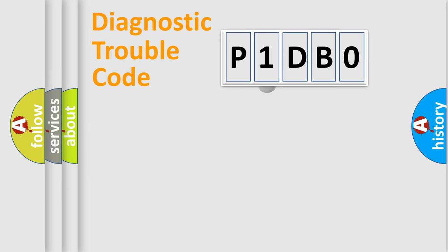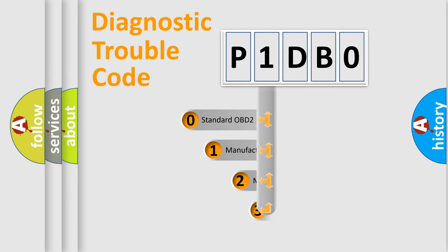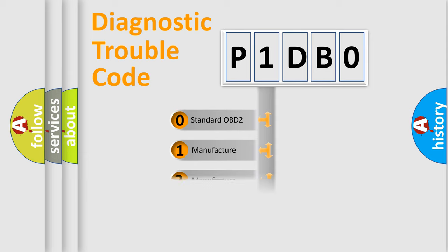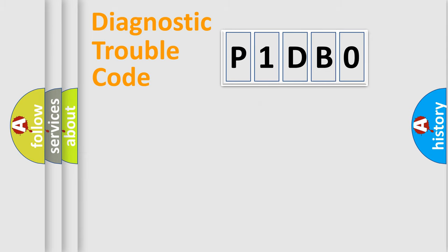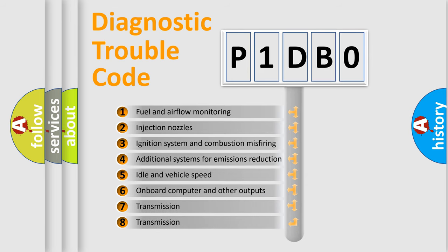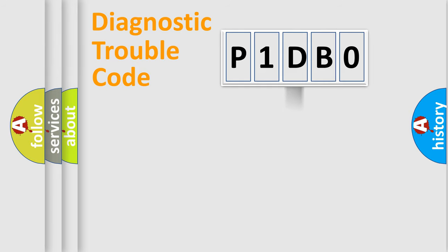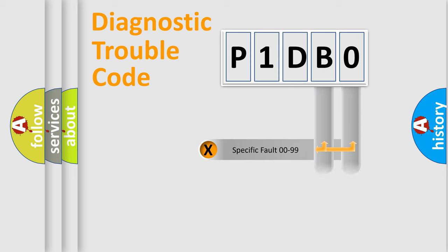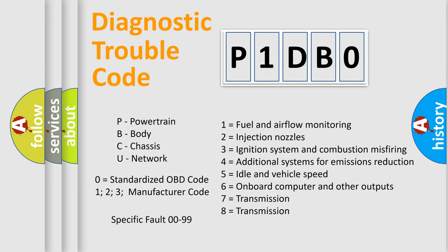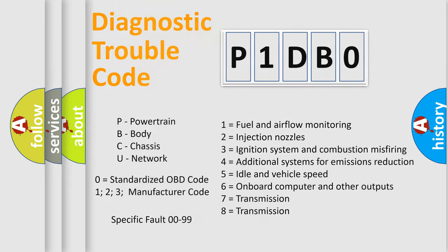This distribution is defined in the first character of the code. If the second character is expressed as zero, it is a standardized error. In the case of numbers 1, 2, or 3, it is a manufacturer-specific error expression. The third character specifies a subset of errors. This distribution is valid only for the standardized DTC code, and only the last two characters define the specific fault of the group. Note that this division is valid only when the second character is zero.